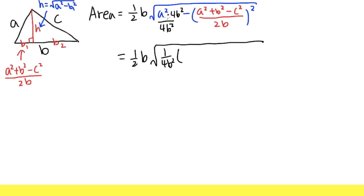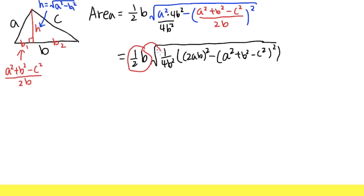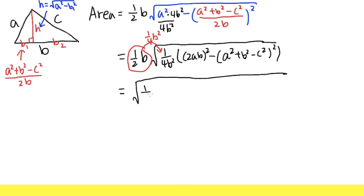Inside the square root we have 4A²B² minus (A² + B² - C²)². It's a good idea to write the first term as (2AB)² and keep the second as (A² + B² - C²)². This way we can use the difference of two squares to factor the expression inside. Let's invite the 1/(2B) factor inside the square root, where it becomes 1/(4B²), and 1/4 × 1/4 = 1/16. The B² terms cancel out.